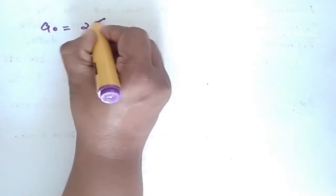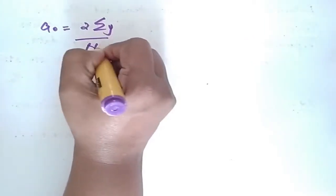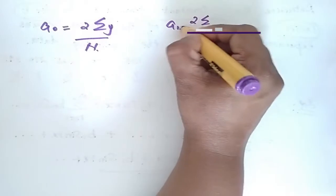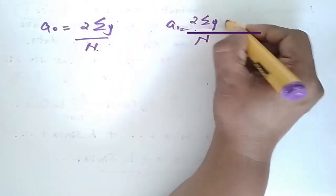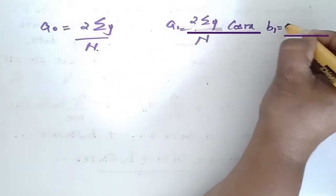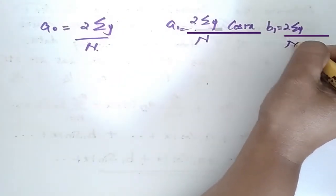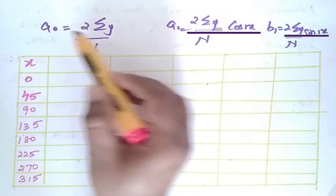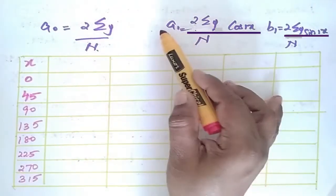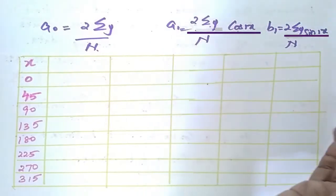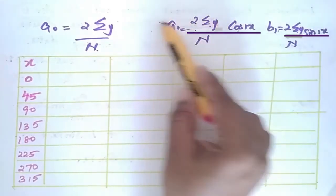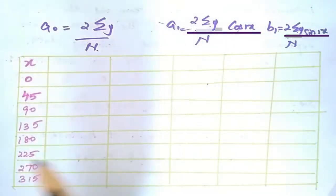The formulas are: a0 = 2 × (Σy / n), a1 = 2 × (Σy·cos(x) / n), and b1 = 2 × (Σy·sin(x) / n).